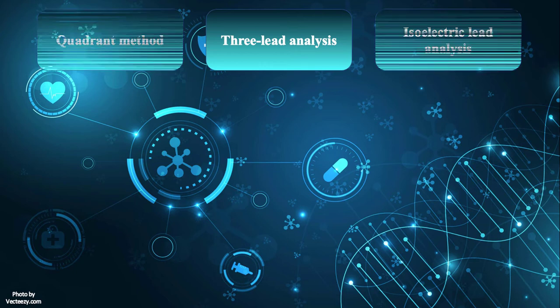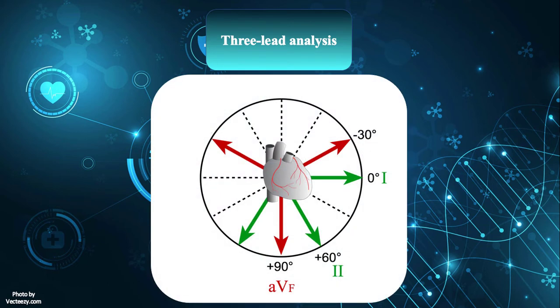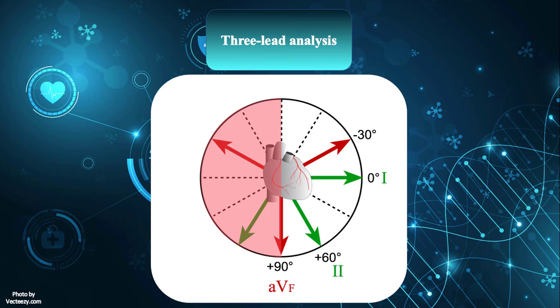Among all these methods, the three-lead analysis is the easiest way for axis determination. In this method, leads 1, 2, and AVF are utilized to calculate cardiac axis. When lead 1 is positive, use lead 2 to determine cardiac axis. But if lead 1 is negative, use AVF instead for axis calculation.